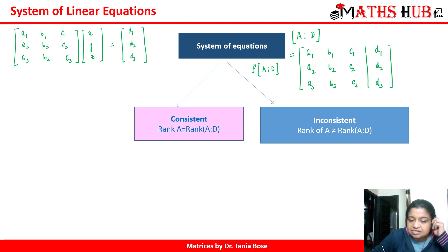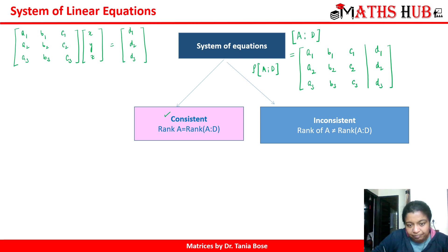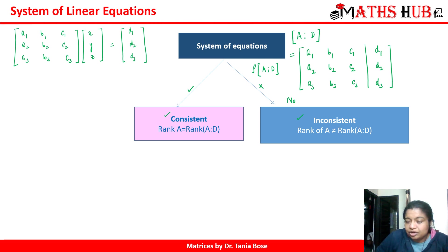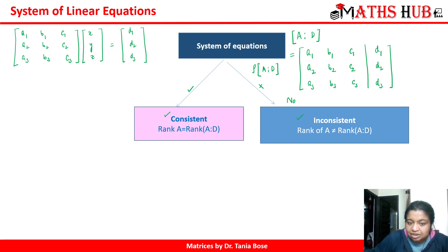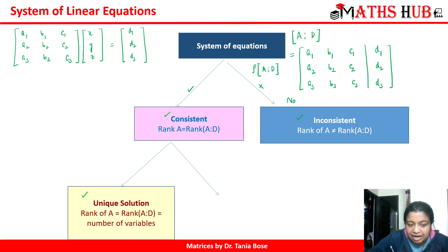The system of equations will have a consistent solution — meaning it has a solution — whenever the rank of A and the rank of the augmented matrix [A|D] are equal. The system will be inconsistent — meaning no solution — whenever the rank of A is not equal to the rank of [A|D]. You need to remember these conditions. When we talk about consistency, we again have two different types: either the solution is unique or it has infinitely many solutions.